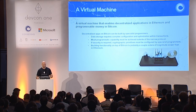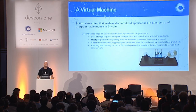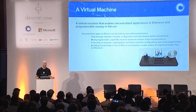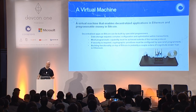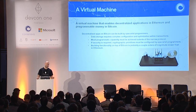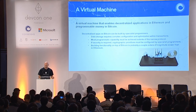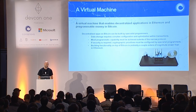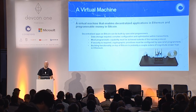The fifth element is a virtual machine. Bitcoin has a very simple virtual machine and a very simple programming language. Essentially, if you're going to build an application on Bitcoin, you need to figure out how to stuff all the data that you care about into a small number of bytes.